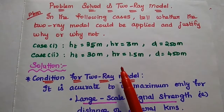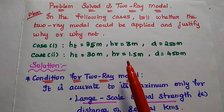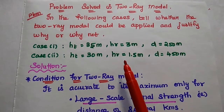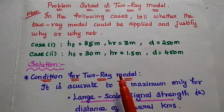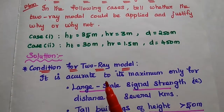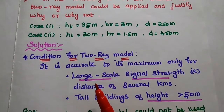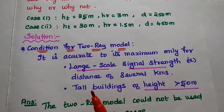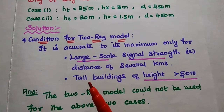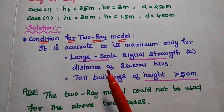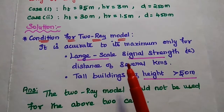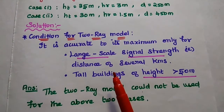We are going to analyze whether the two-ray model could be applied for the given data or not, and if not, what could be the reason. In the solution part, first we have to understand the condition for the two-ray model. The two-ray model is accurate to its maximum value only for two conditions.